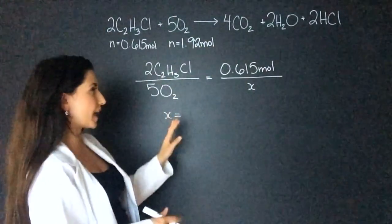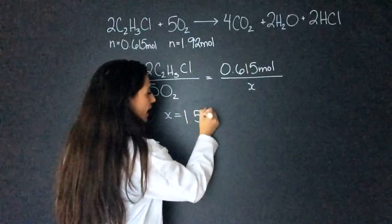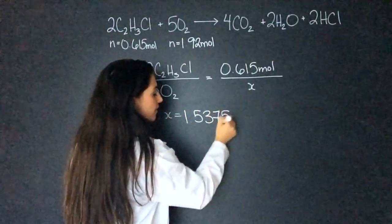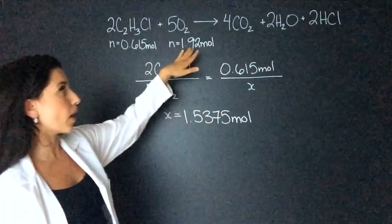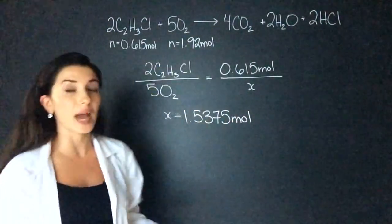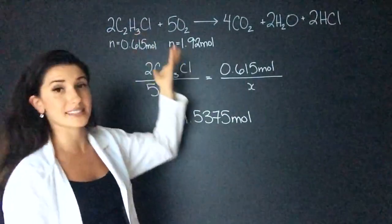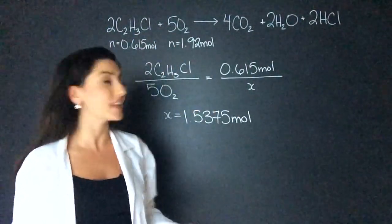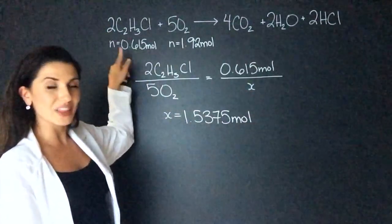When I cross multiply and divide this, I get that X equals 1.5375 mole. Now this is less than what I have. So I know that I'm going to have enough oxygen. And in fact, I'll actually have excess oxygen. So I know that the limiting reagent is C2H3Cl, this molecule.